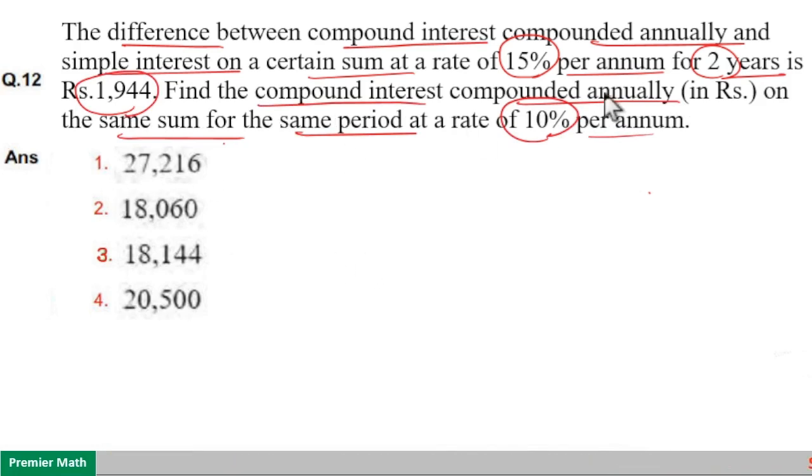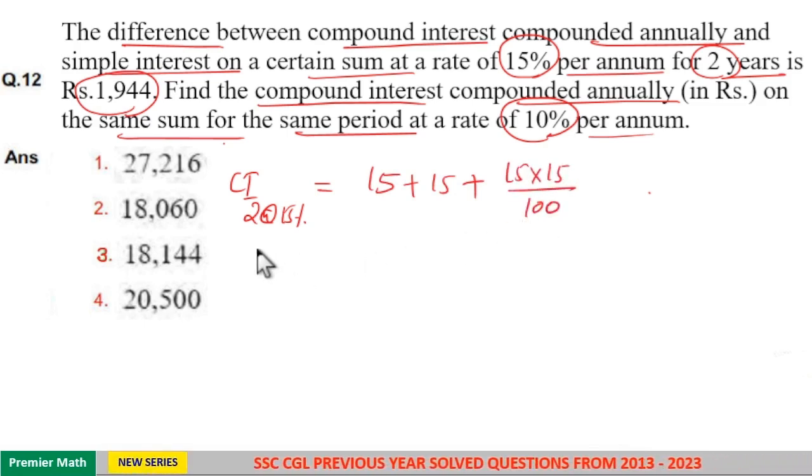Here use the successive increment formula. Compound interest for 2 years at the rate of 15% per annum means (15 + 15 + (15 × 15)/100). That is 15 plus 15 plus 15 into 15 divided by 100 is the compound interest for 2 years at 15% per annum.